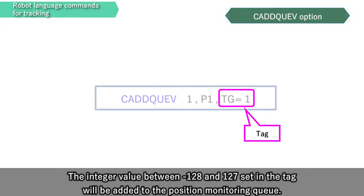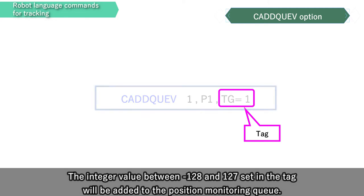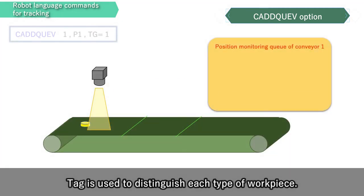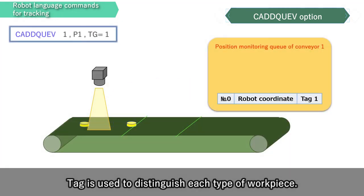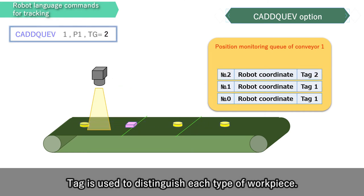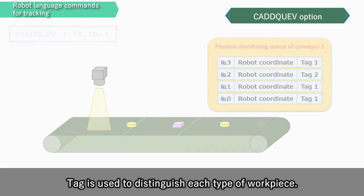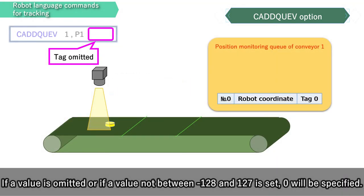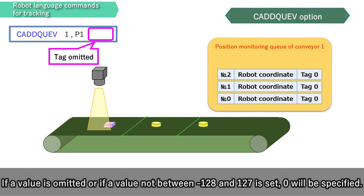The integer value between minus 128 and 127 set in the tag will be added to the position monitor in queue. Tag is used to distinguish each type of workpiece. If a value is omitted or if a value not between minus 128 and 127 is set, 0 will be specified.